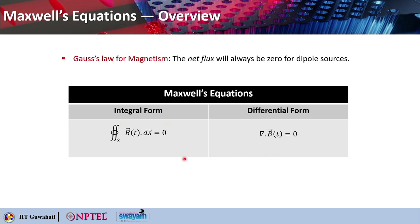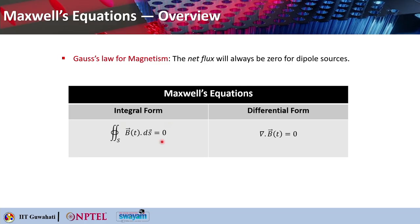Gauss's law for magnetism states that the net magnetic flux through any closed surface is always zero, since there are no magnetic monopoles. The surface integral ∮B·dS = 0, meaning flux entering equals flux exiting. In differential form: ∇·B = 0.